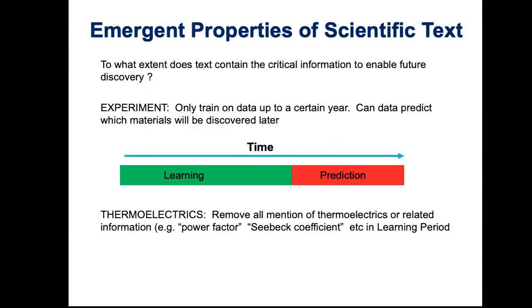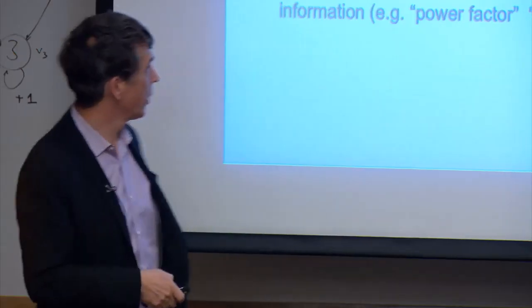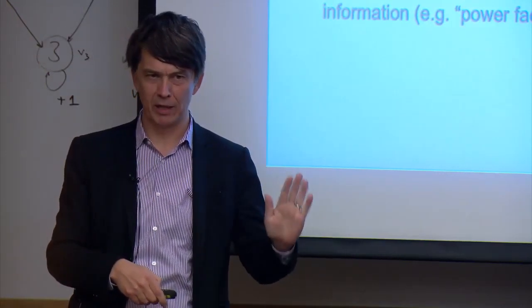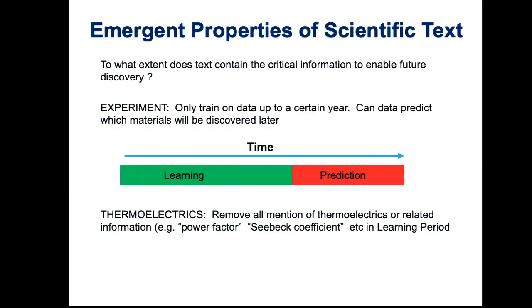So we wanted to do a serious test: does the literature embody future predictions without actually making them? I'm going to take the body of text up to a certain time, artificially cut it off, and try to predict what comes later. Specifically, I'm going to try to predict new thermoelectric materials based on what was said before — except I remove all mention of thermoelectric-related words like power factor and Seebeck coefficients. The question is: can I predict thermoelectrics that will be studied later?